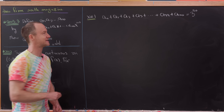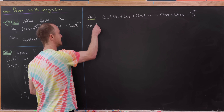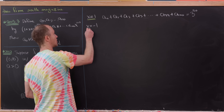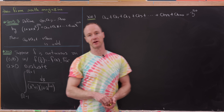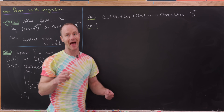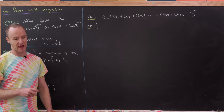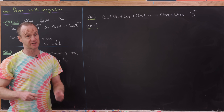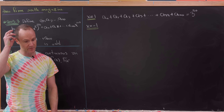Now we'll set x equal to minus 1. This has the effect of building an alternating sum, and that's actually the trick here. If we've got an alternating sum, we can add these two results and isolate only the even terms. We could also subtract them to isolate the odd terms if we wanted.